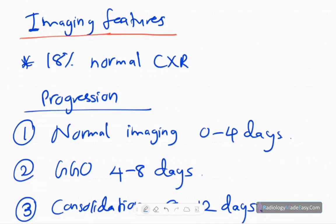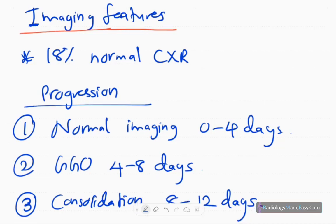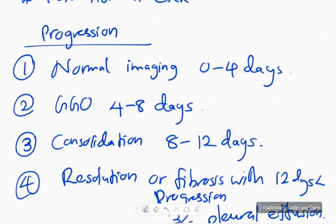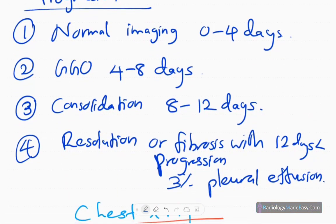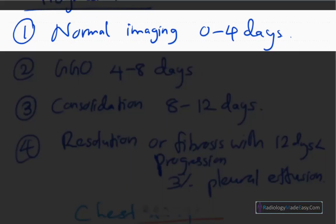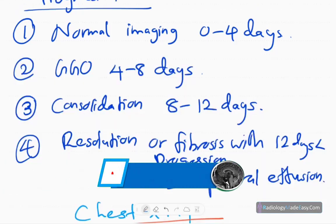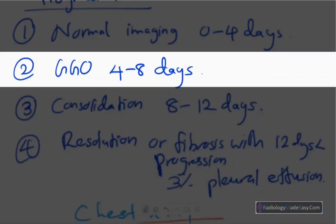Regarding imaging features, 18 percent of patients have normal chest X-rays. The disease progression can be divided into four stages. In the initial stage, from 0 to 4 days, imaging — both chest X-ray and HRCT — may be normal. From 4 to 8 days, patients develop ground glass opacification.